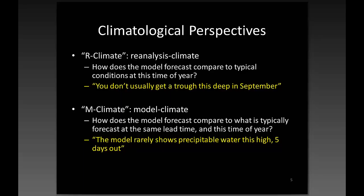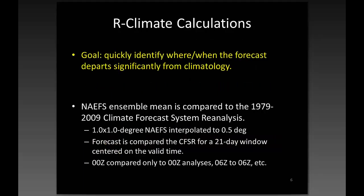One of the first things I want to talk about is a tool we've worked on with the WFO in Salt Lake City. We want to try and put our ensemble forecast into context. The most common approach is what we call R-climate — reanalysis climate — where we compare the model forecast to reanalysis typical conditions at this time of year, so you can say, for example, you don't usually get a trough this deep in September. An alternative approach we're just starting to use is M-climate, or model climate, where we ask how the model forecast compares to what is typically forecast at the same lead time and time of year. For example, the model rarely shows precipitable water this high five days out, which is especially applicable to QPF.